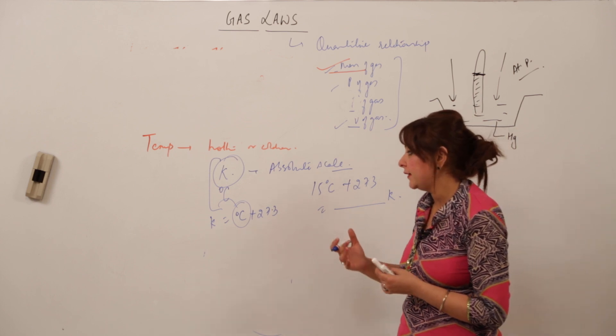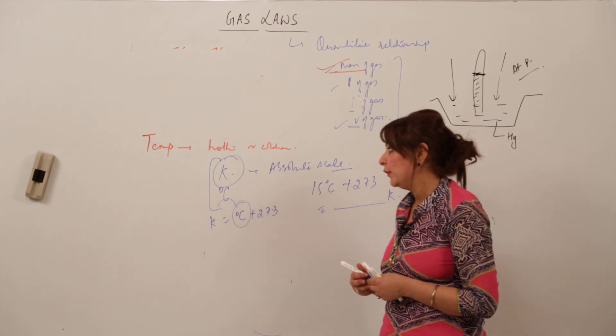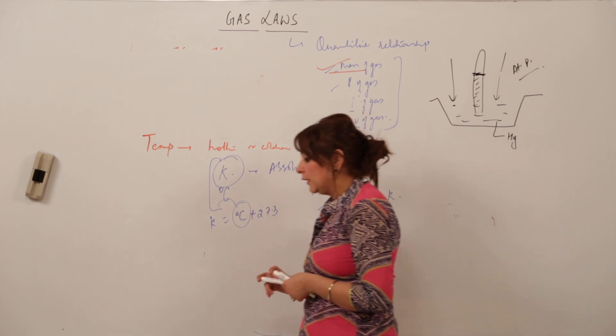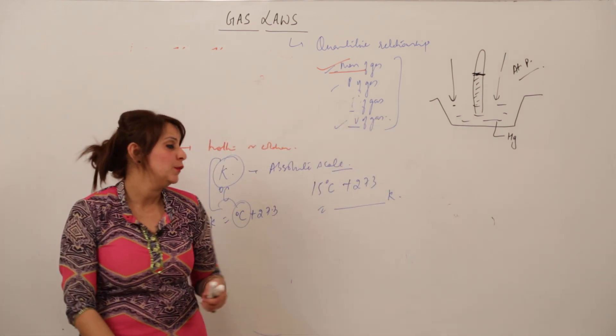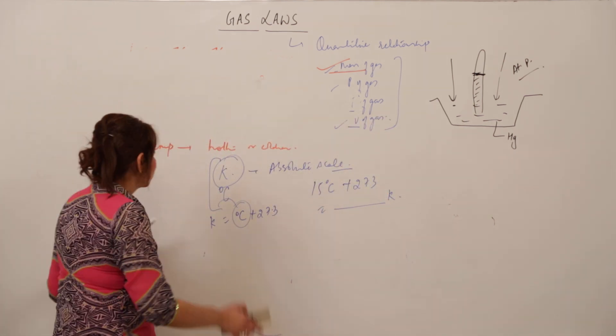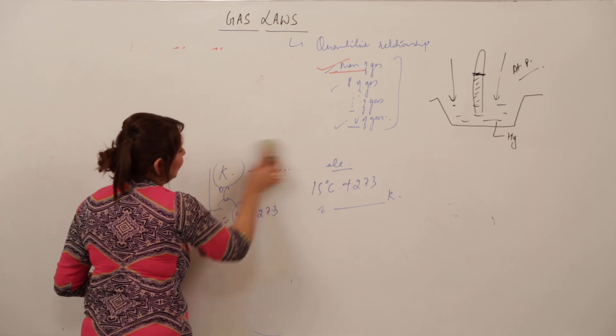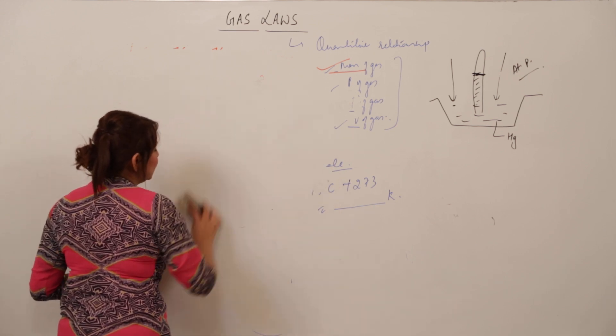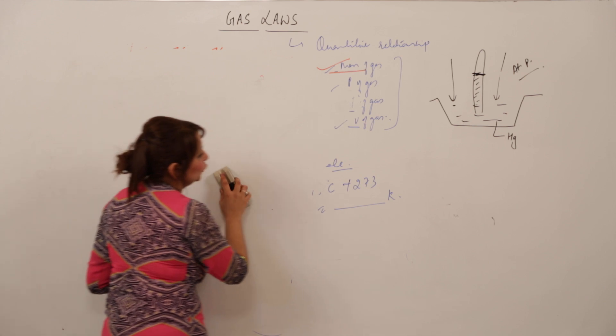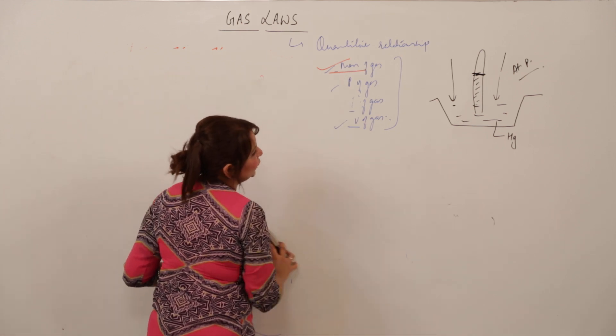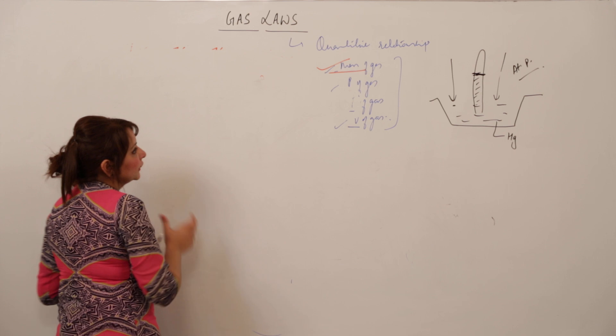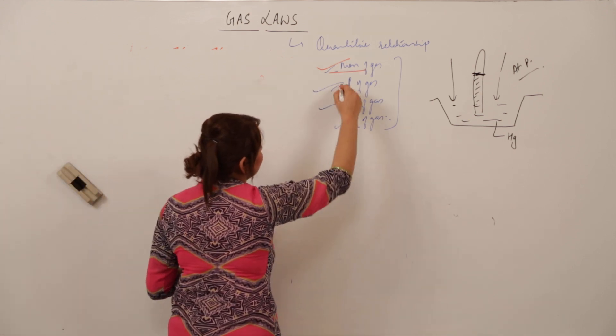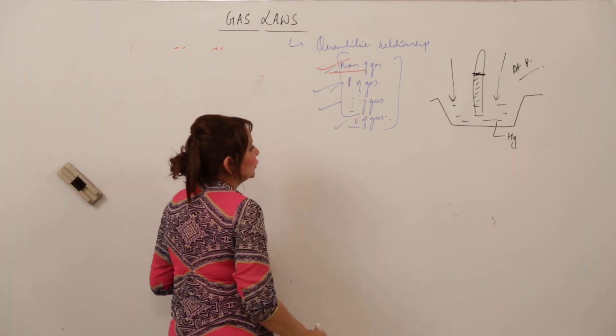And the opposite - if you are subtracting 273 from Kelvin you get the result in degree Celsius. So how these scales can be inter-converted from one scale to another scale. But otherwise the SI unit, the absolute scale which is used is Kelvin scale. So it is better when you are performing the numericals, just take the temperature into Kelvin by converting the degree Celsius by adding 273 to it.